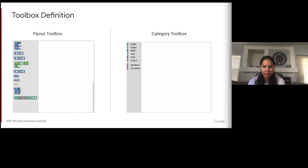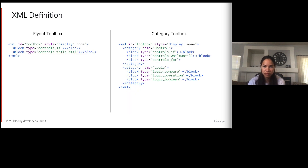The category toolbox allows you to break up a long list of blocks into different categories. You can define both of these toolboxes using XML — this is how toolboxes have always been defined in the past, so I'm going to gloss over this a bit. If you want more information on this, you can find it on our developer guide on the toolbox page, and I'll add a link at the end of this presentation.